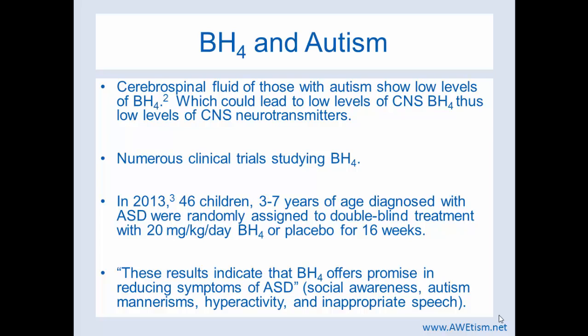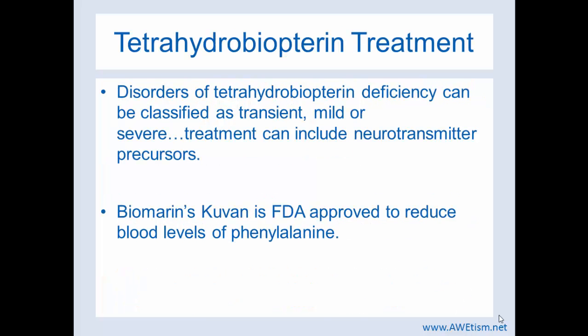Think back to the earlier slide with indications of need — that's really how you start the conversation with your physician as to whether this is something your child would need. Tetrahydrobiopterin treatment: there are well-known disorders of tetrahydrobiopterin deficiency. You don't have to have autism to have this deficiency, and you can have autism and not have tetrahydrobiopterin deficiency. These deficiencies can be classified as transient, mild, or severe, and treatment depends upon severity. Some treatment can include neurotransmitter precursors if it's severe enough. There is one FDA-approved medication — Biomarin's Kuvan — and it's FDA-approved to reduce blood levels of phenylalanine. Many physicians have used this off-label for those with autism.